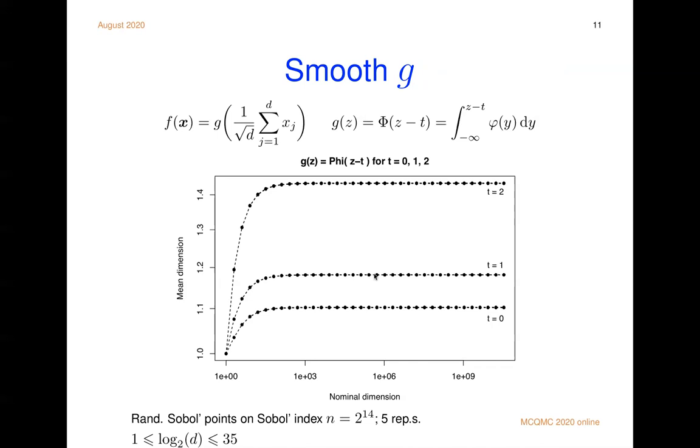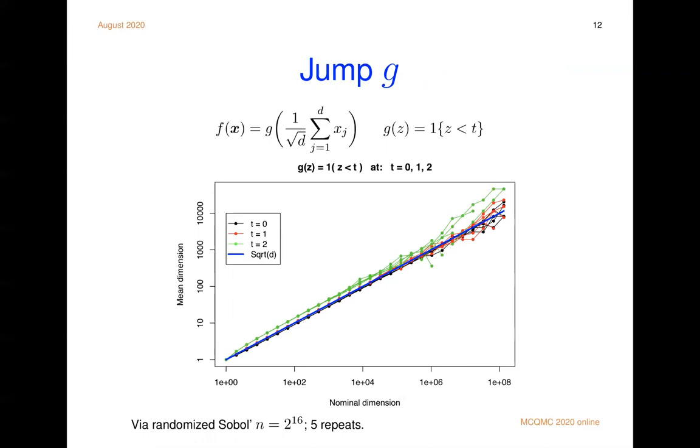Now let's look at the jump discontinuity. For the jump discontinuity, we have the nominal dimension going just past 10 to the 8. And now the mean dimension, we're in log log scale, it goes up to about 10 to the 4. There's a reference line here. The blue reference line has mean dimension equal to the square root of the nominal dimension.